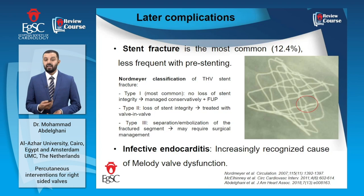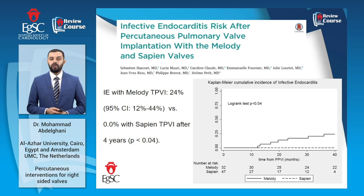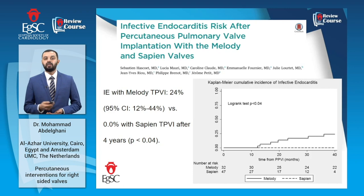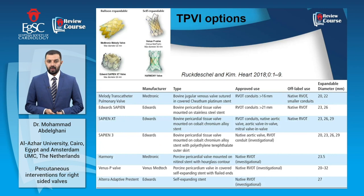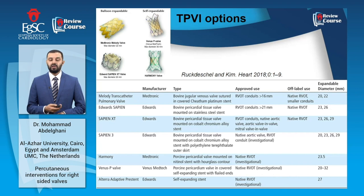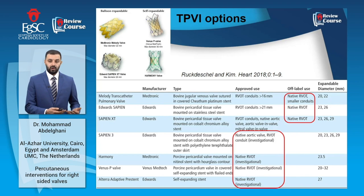Infective endocarditis of the transcatheter pulmonary valve is an increasingly recognized cause of Melody valve dysfunction. The risk of endocarditis appears higher with the Melody compared to the Edwards SAPIEN valves, the suggested reason being higher vulnerability of the bovine jugular vein tissue of the Melody valve to infection compared with the pericardial tissue leaflets of the SAPIEN valves. Beyond these devices, many other options are being introduced targeting currently off-label indications of TPVI, including large, small, and native RVOTs.